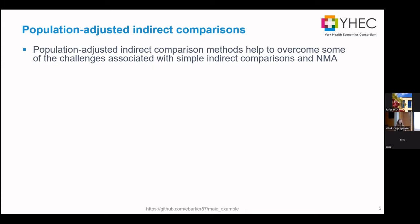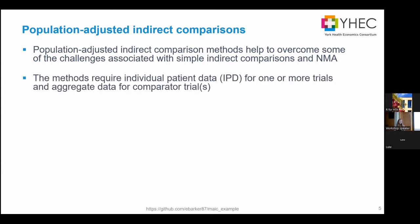Population adjusted indirect comparisons are the methods that help overcome those two issues. This usually requires IPD — individual patient data — for one of the trials, and then aggregate data for the comparator or multiple comparators. In most cases, a company submitting will have their own IPD but won't have data for comparator trials, especially in disease areas with many different treatments where it's not practical to include them all in an RCT.